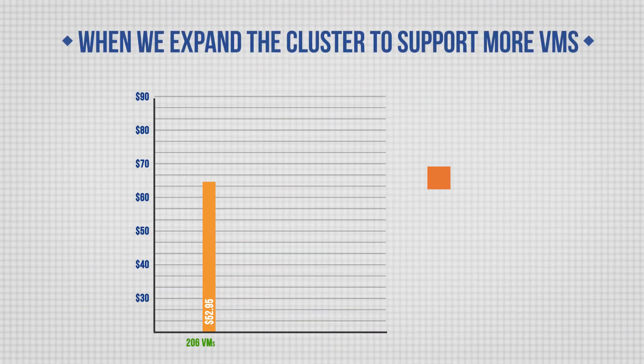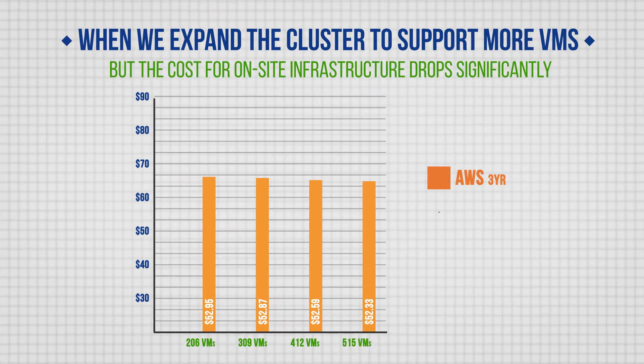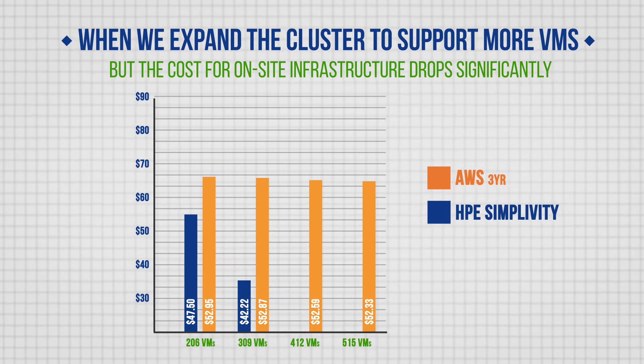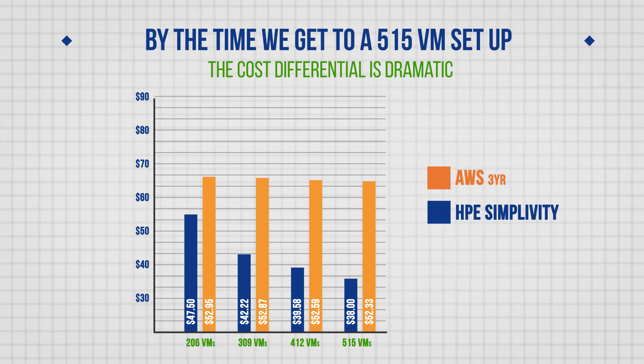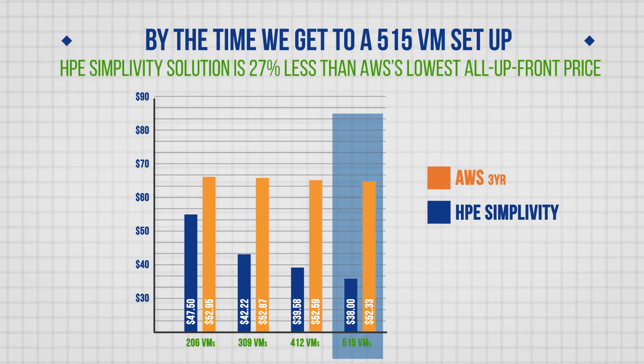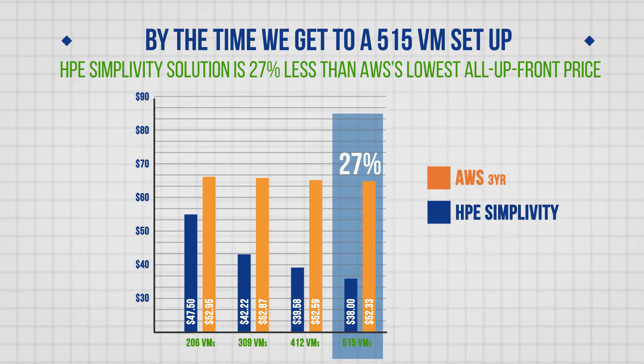And when we scaled the infrastructure, as usually happens in the real world, the numbers changed. When we expand the cluster to support more VMs, the AWS costs stay roughly the same. But the cost for on-site infrastructure — the HPE SimpliVity cluster — drops significantly. By the time we get to a 515-VM setup, the cost differential is dramatic. At this level, the HPE SimpliVity solution is 27% less than AWS's lowest all-up-front price, and 55% less than the AWS on-demand price. Not only is the cloud assumption wrong, but the cloud is not less expensive at any pricing level — and it's really inaccurate as you grow.